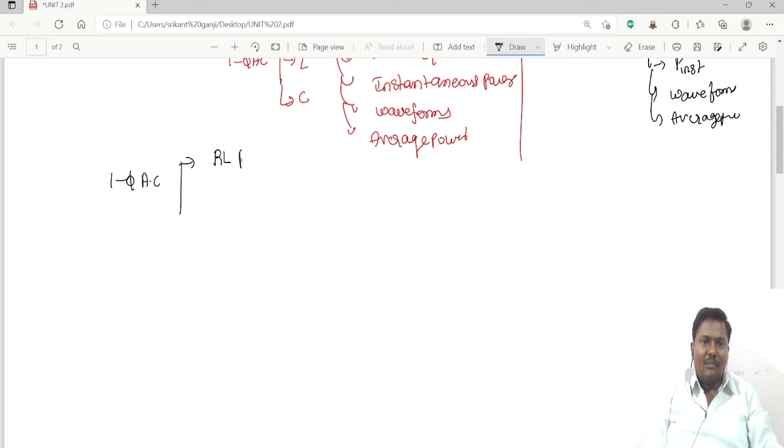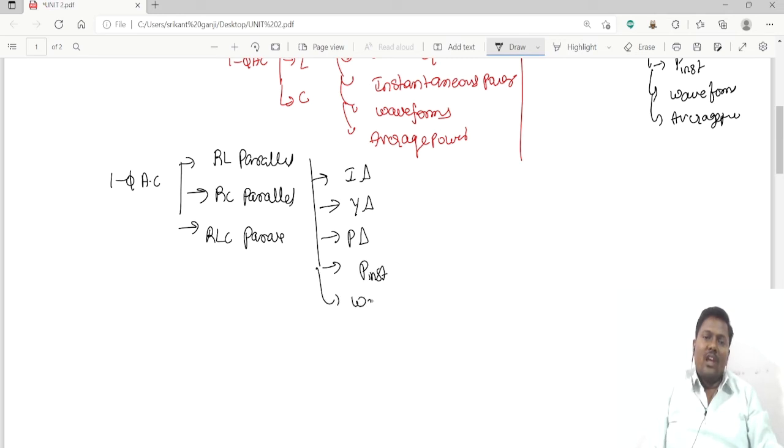If single-phase AC supply is given to RL parallel combination, RC parallel combination, and RLC parallel combination, for this we can go for the current triangle, after that admittance triangle, after that power triangle, then instantaneous power, waveforms, and after that average power.